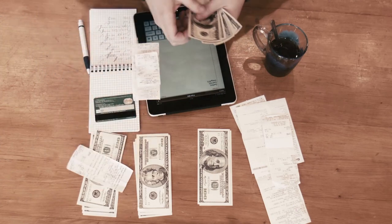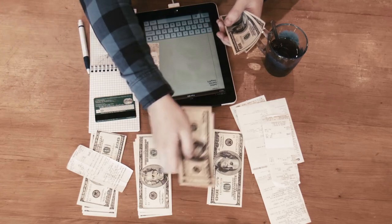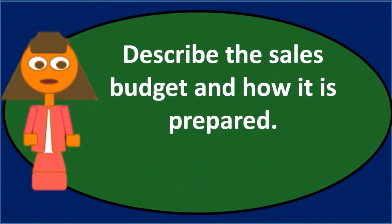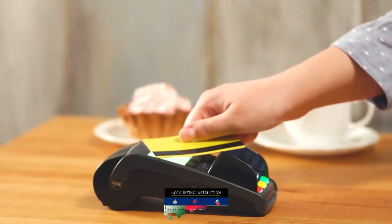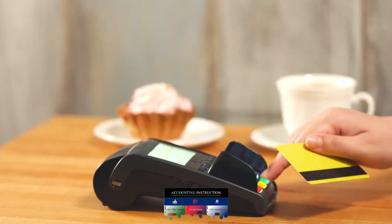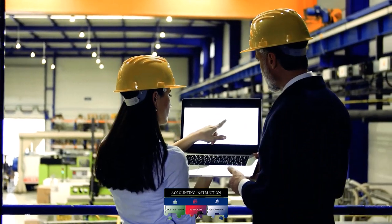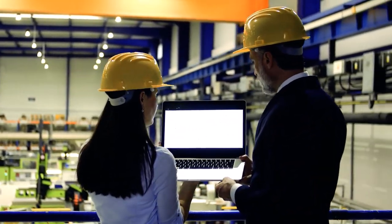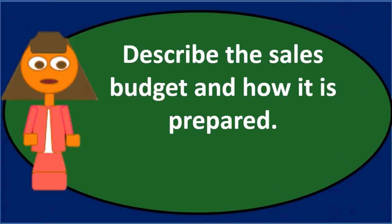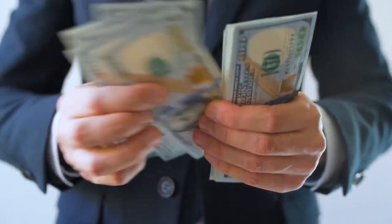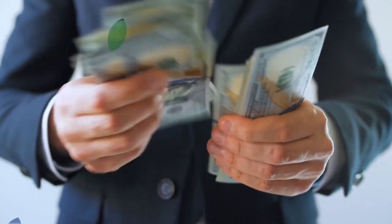We're going to have to do analysis on this because we want to project into the future how many units we're going to sell and how much we're going to charge for those units. We might have to consider things like advertising to determine how many units we'll sell. We need the units in order to calculate things like a production budget and a raw materials budget — these are dependent on the units we'll be producing. The sales dollars is also the starting top-line revenue as we go through the rest of the budgeting process.